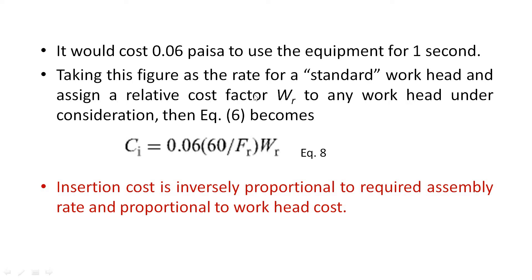If we take this figure as the standard and compare any other work head, we apply Equation 6, which says: cost of insertion = 0.06 × (60 / FR) × WR, where WR is the relative cost factor of the work head created. From this equation, we can say that cost of insertion is inversely proportional to required assembly rate and proportional to the work head cost — the higher the feed rate, the lower the cost of insertion; but the higher the special work head cost, the higher the cost of insertion.